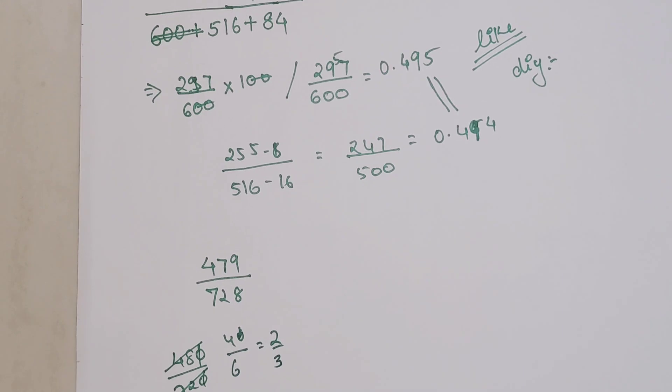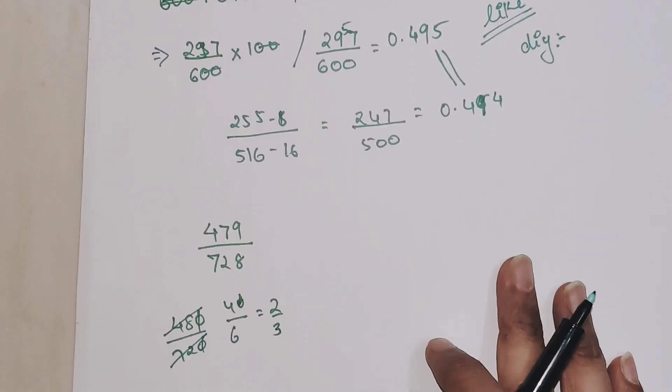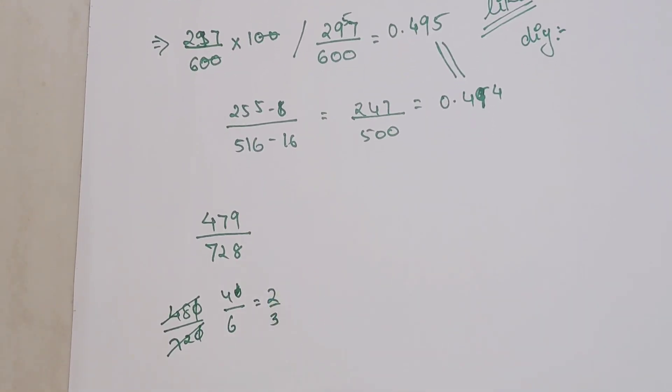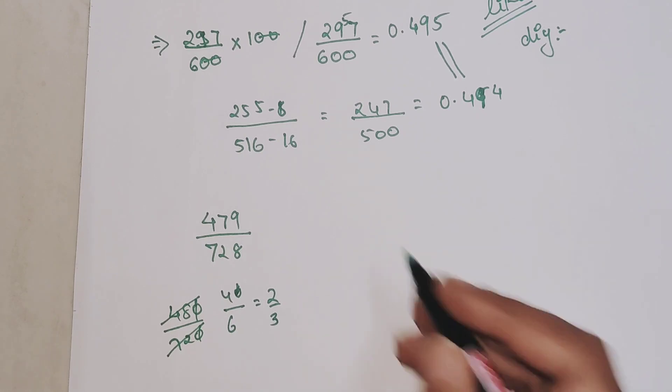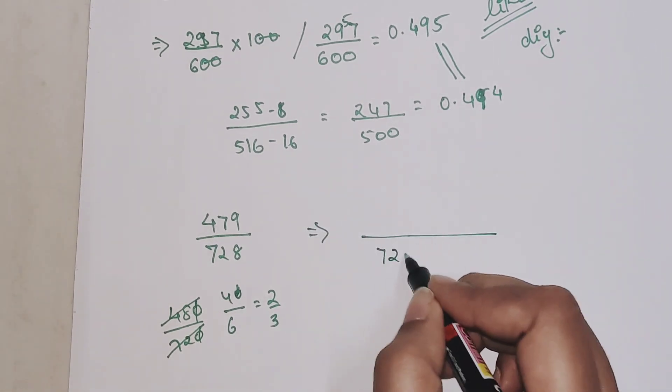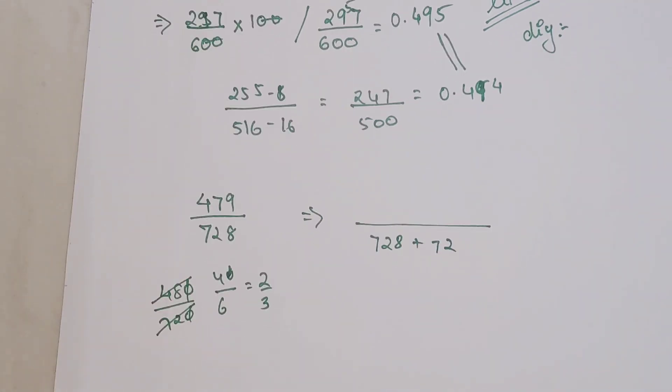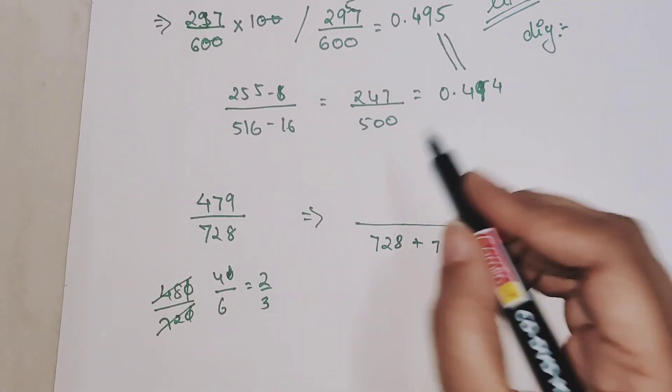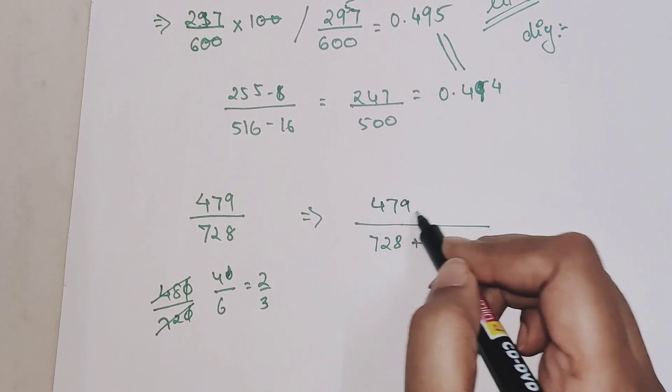This is coming out to be 2/3. Now I can make 728 as 800 if I want. So 728+72 will get me 800.